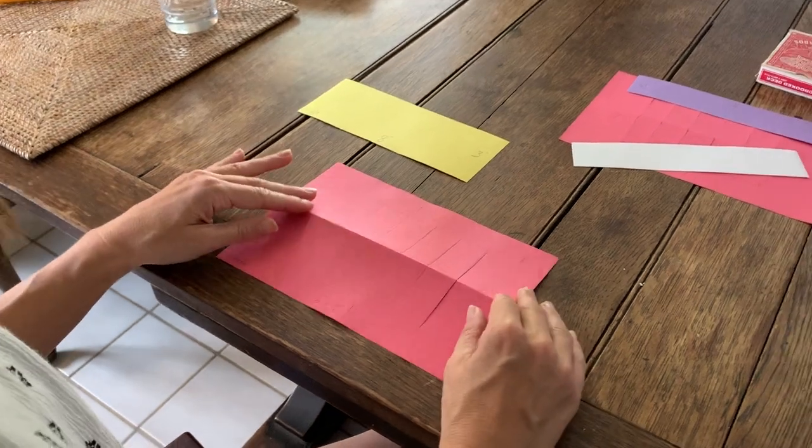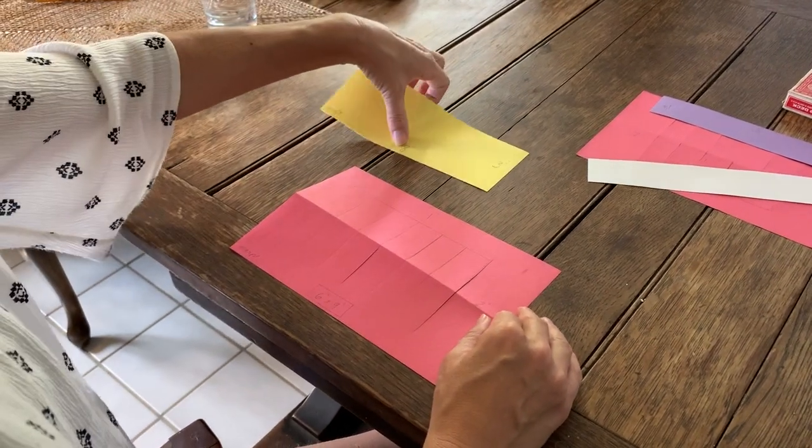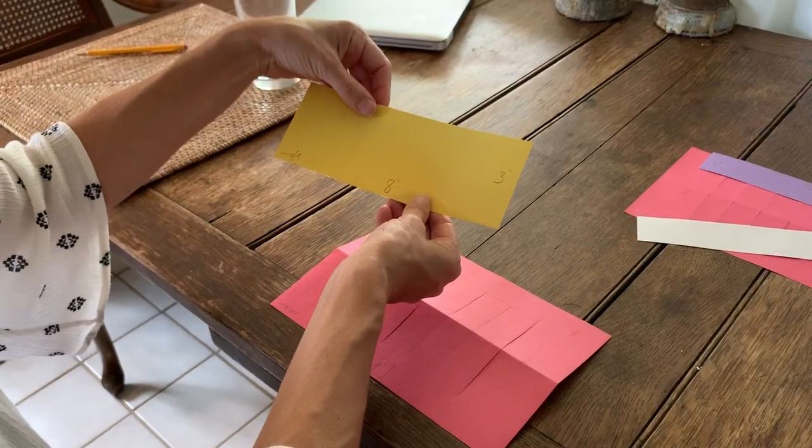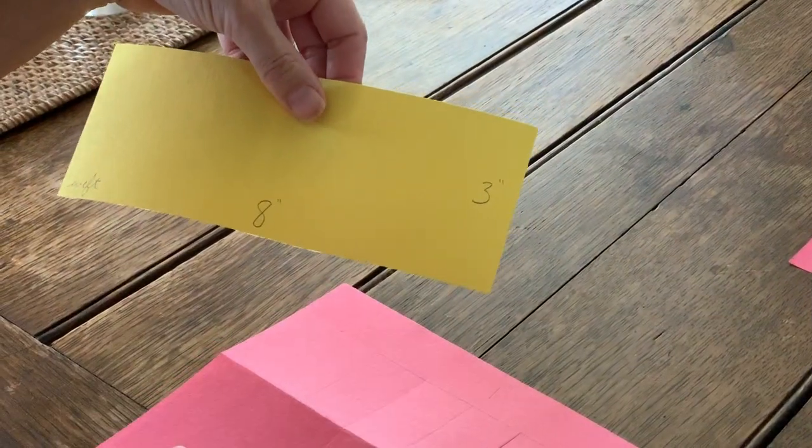That makes my warp. This strip of paper is eight inches by three inches and I'll show you how we weave it.